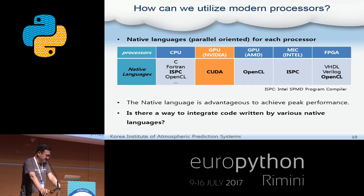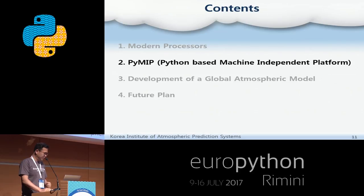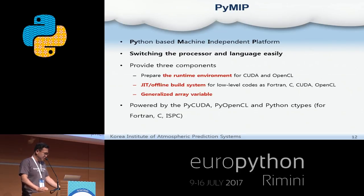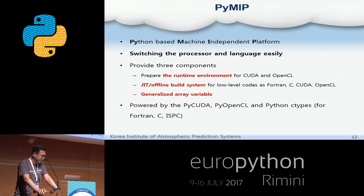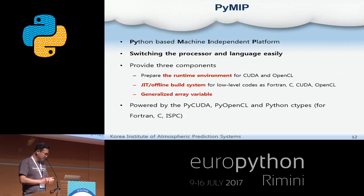So my question has changed: is there a way to integrate code written by various native languages such as CUDA, OpenCL, and ISPC? So I made a new small Python module named PyMip. PyMip stands for Python-based machine-dependent platform. The goal of PyMip is to switch the processor and the language easily. PyMip provides three components: a runtime environment, build system, and generalized array variable. PyMip is powered by PyCUDA, PyOpenCL, and Python ctypes module. The Python ctypes module is used to wrap the Fortran, C, and ISPC libraries.